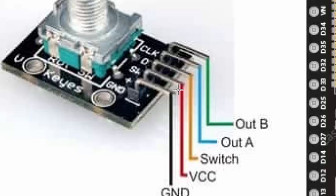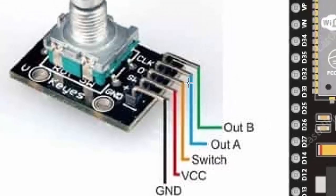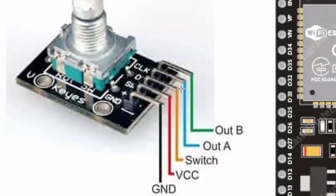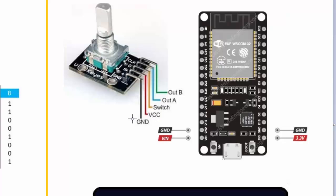These are the pin configurations: we have a ground signal, a VCC signal, and an optional switch which is a push button — you can use it or neglect it. All you really need are output A and output B. Now let's move into our Arduino code and see how we can code it.